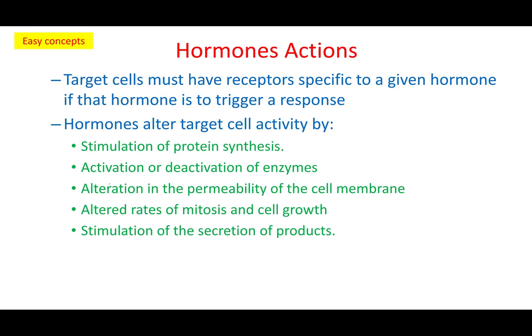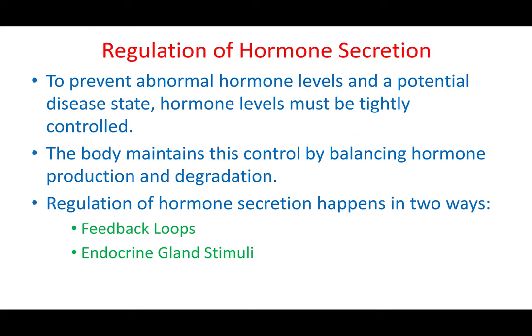What do hormones do to other cells? They can stimulate protein synthesis, activate or deactivate enzymes, alter the permeability of the cell membrane, induce mitosis and cell growth, or stimulate the secretion of other products. Different activities get induced by those hormones. Now let's start talking about the regulation of hormone secretion.